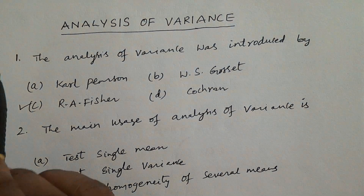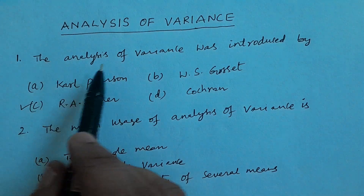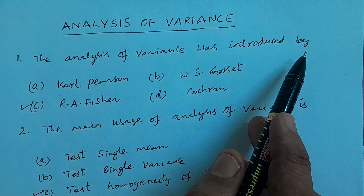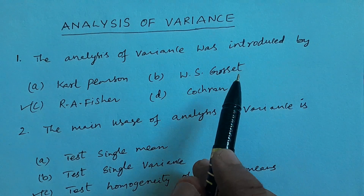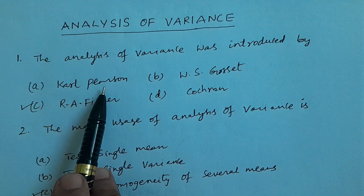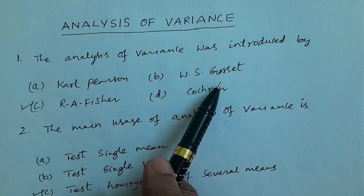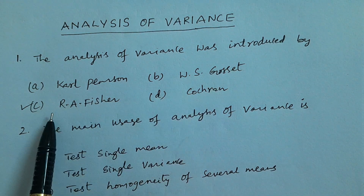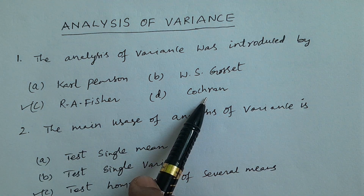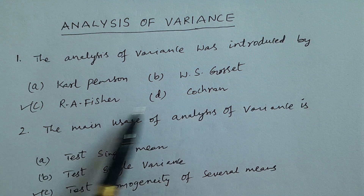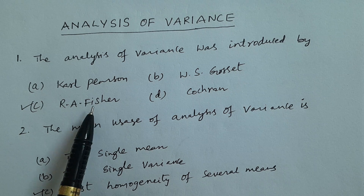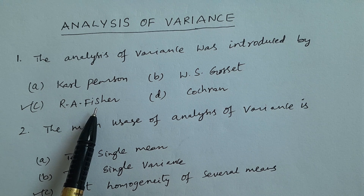Question number one: The Analysis of Variance was introduced by whom? Options: A. Carl Pearson, B. W.S. Gossett, C. R.A. Fisher, D. Cochrane. The answer is C — R.A. Fisher. Analysis of Variance was introduced by R.A. Fisher.